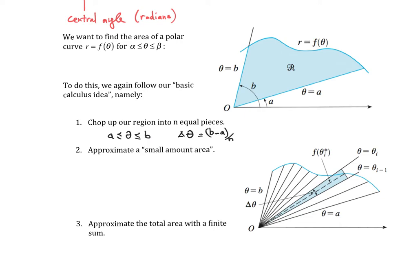If you look at this picture at the right bottom side, theta is ranging from a to b. When we chop it up into n equal pieces, you get these equally spaced wedges, angle wedges.